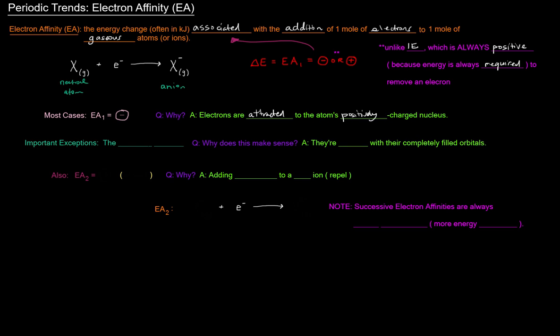There are obviously important exceptions. One really important exception is the entire eighth group — the 8A group, the noble gases — because they don't want to gain an electron. They don't want to lose an electron. They're stable with their completely filled orbitals.